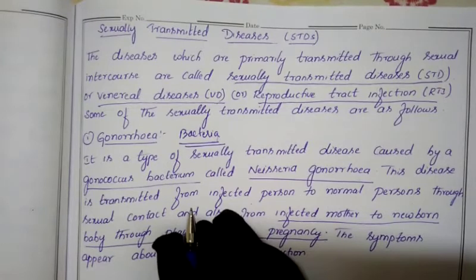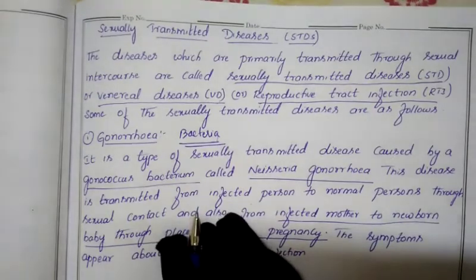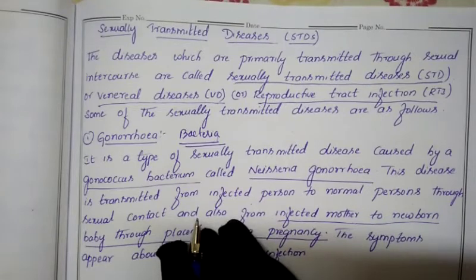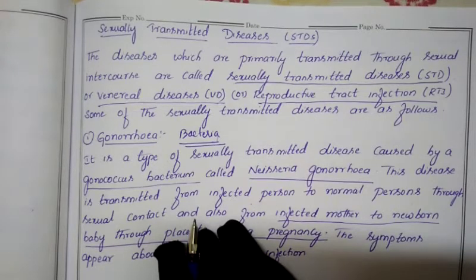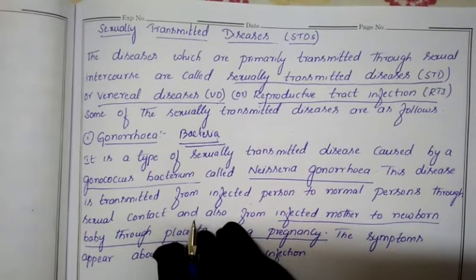In our previous class we also discussed MTP — Medical Termination of Pregnancy — which is essentially abortion. Many couples go for abortion after unprotected sex or in cases of rape. The time period for abortion is the first three months; after three months, abortion is not possible.